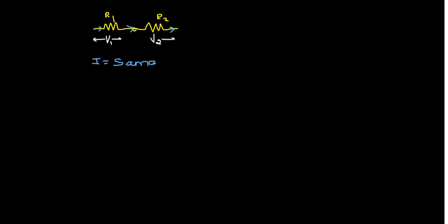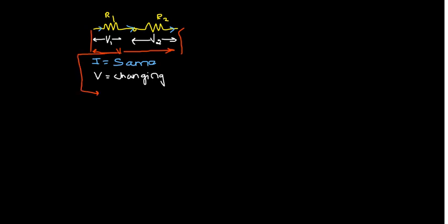Similarly, another ohmic parameter we have seen is the potential difference. Across resistor R1, we are taking V1. Similarly, across R2, we are taking V2. Therefore, V is changing. The derivation method I am using: we are taking the sum of potential differences. Total potential difference across these two resistors is V1 plus V2. And to put the values for V1 and V2, we take the help of Ohm's law: I into R1 plus I into R2.